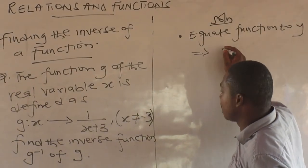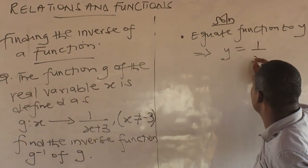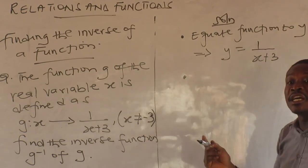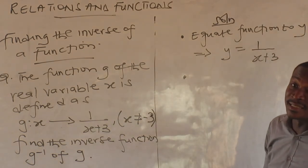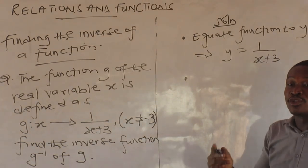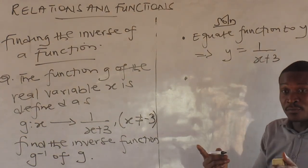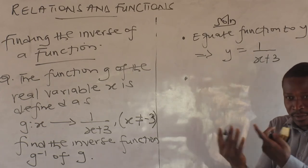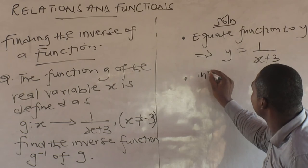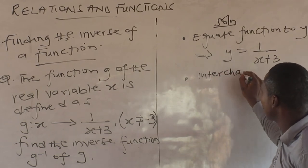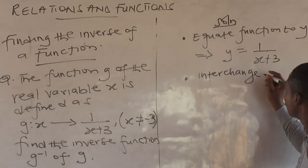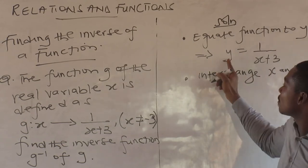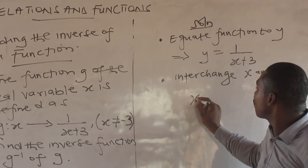Solution: I first equate the function to y as usual. So y equals one over x plus three. The next step is to interchange x and y — because if two is two over one, the inverse is one over two, we are interchanging to get the inverse.